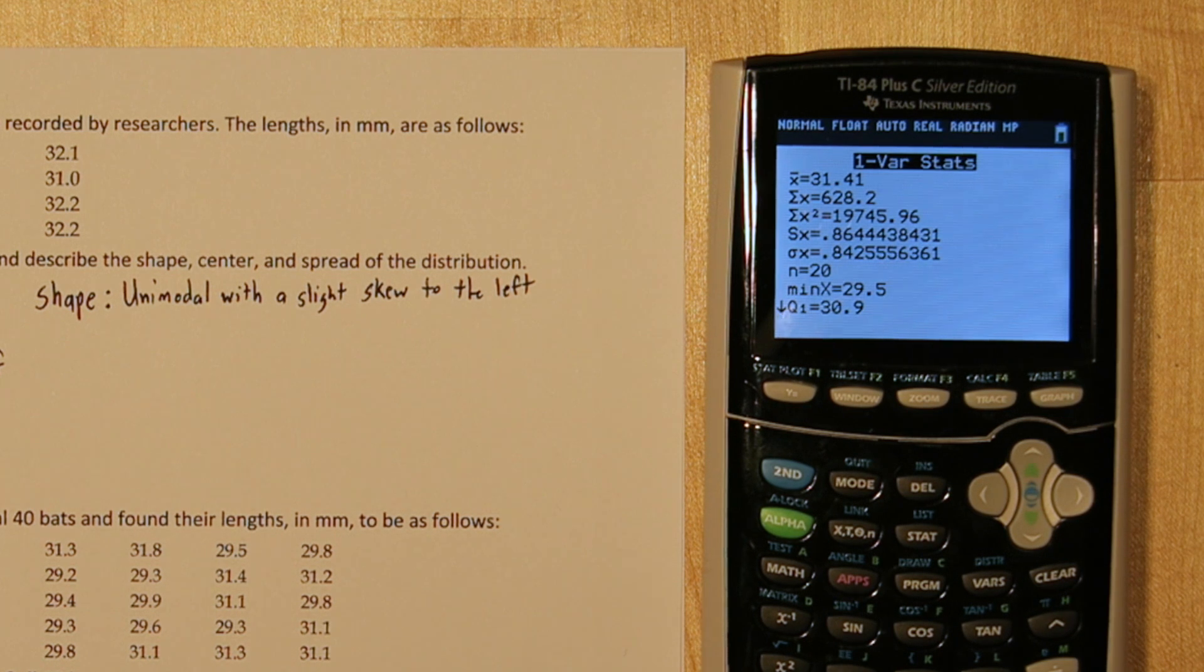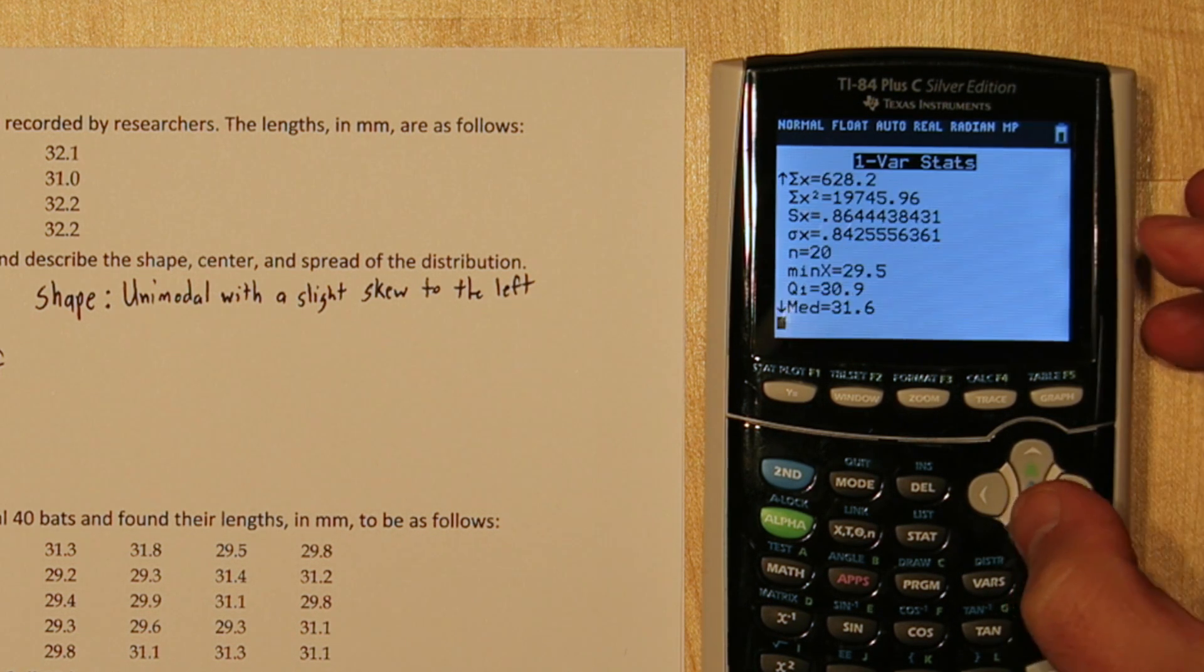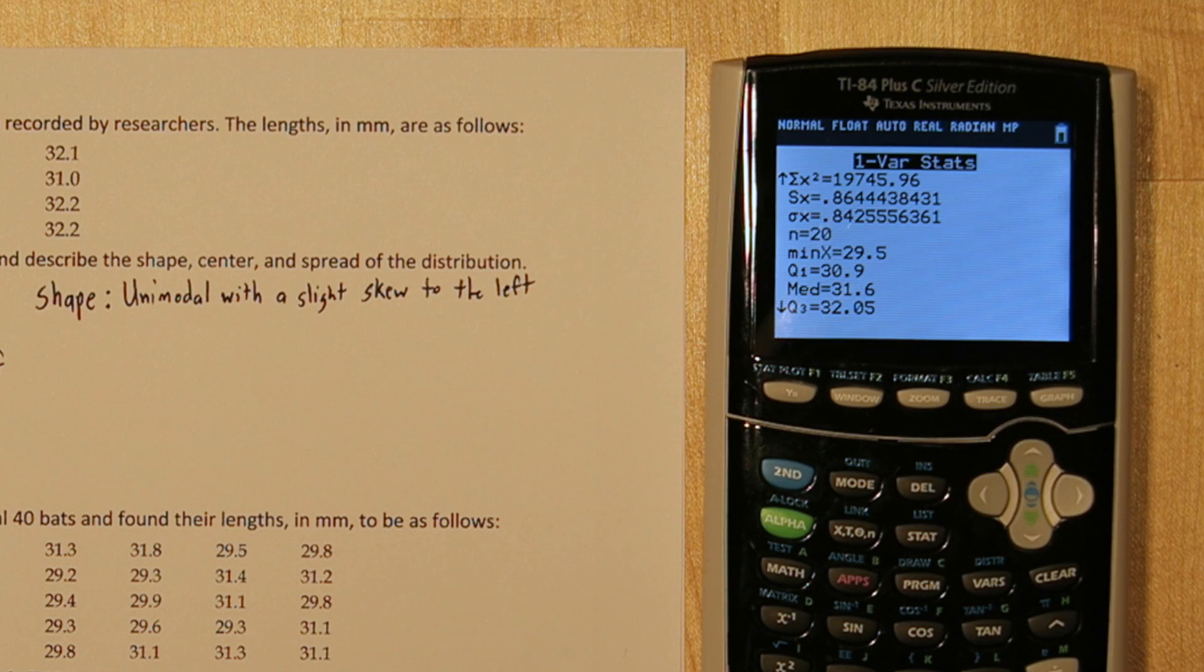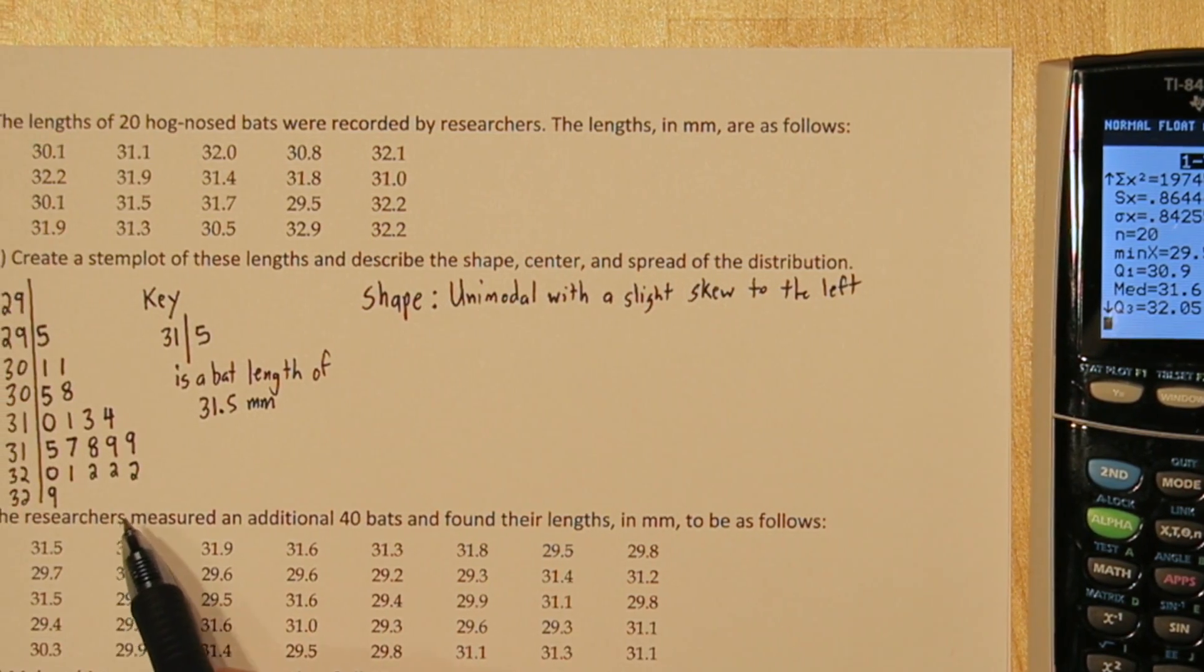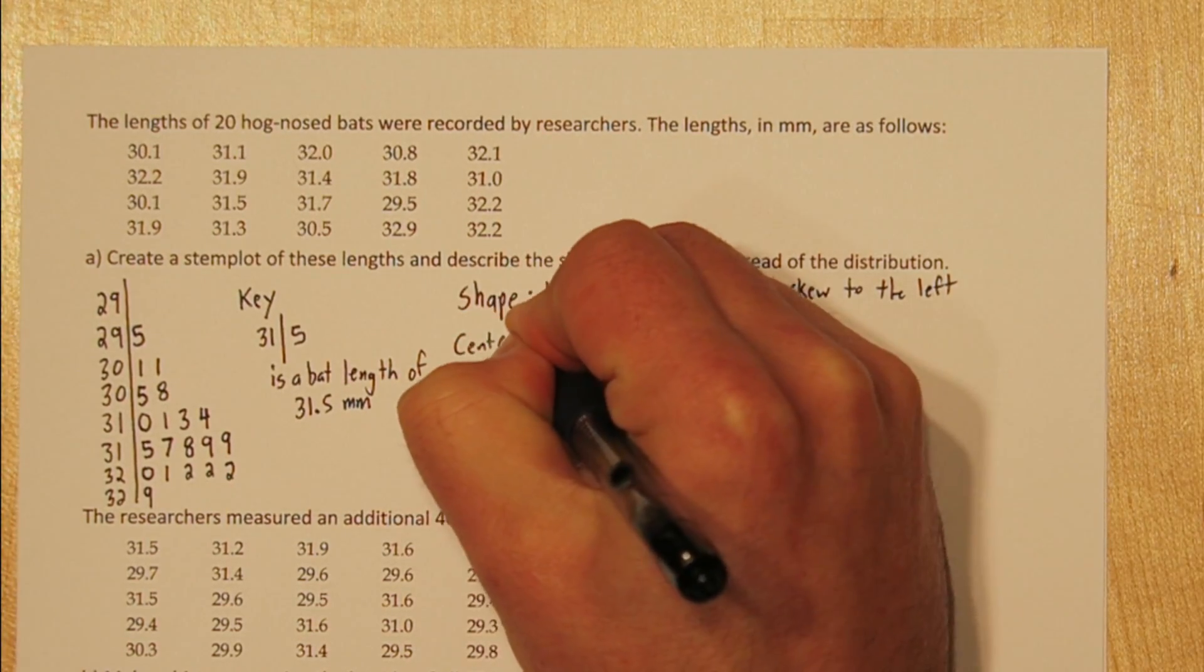Now here's actually a bunch of useful information. This top line is our mean. So that's a measure of center. Also, if we scroll down, we see the median is 31.6. That's another measure of center. Looking through the data, 32.2 appeared three times. So that's our mode. So now we have three measures of center to talk about.